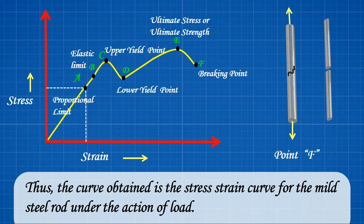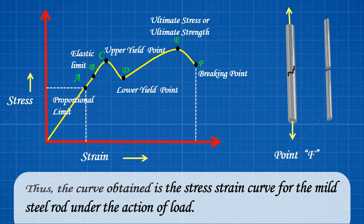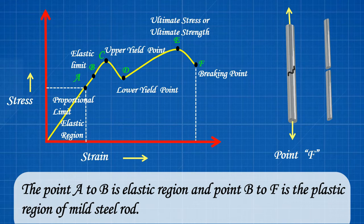Thus, the curve obtained is the stress strain curve for the mild steel rod under the action of load. The point A to B is elastic region and point B to F is the plastic region of mild steel rod.